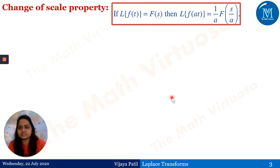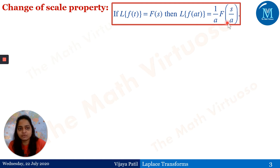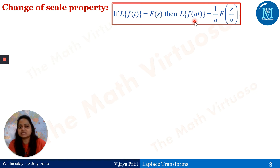The property states that if the Laplace transform of f(t) is equal to F(s), then the Laplace transform of f(at) equals (1/a) times F(s/a). That means wherever we have s, we'll be replacing that s with s/a. So every s will be replaced as s/a in the change of scale property.